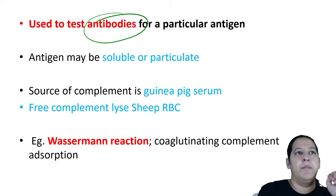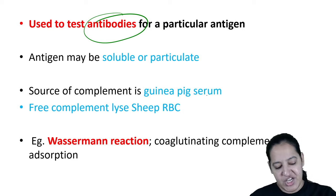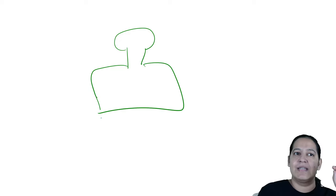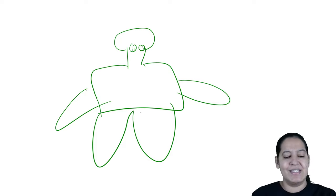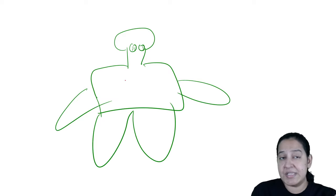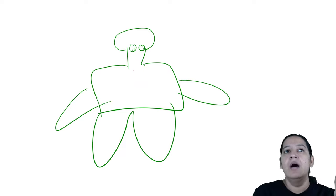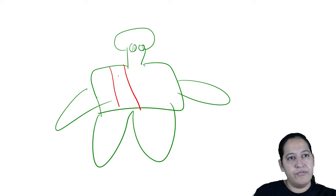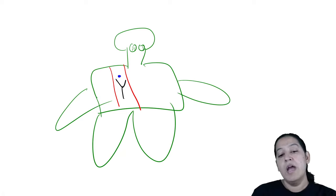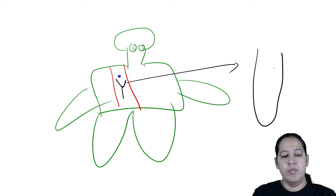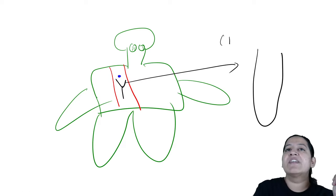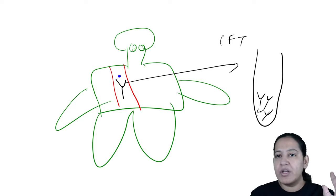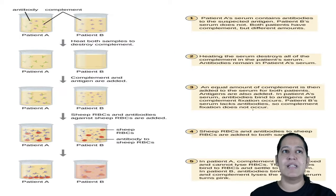CFT is used to detect antibodies in patient serum. Consider two patients with the same symptoms (e.g., fever and tonsillitis), suspected cause: Streptococcus pneumoniae. Serum is taken from both. Patient A has antibodies; patient B does not. Both have natural complement. Step 1: heat both samples to inactivate natural complement. Now patient A has only antibodies; patient B has nothing.